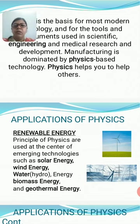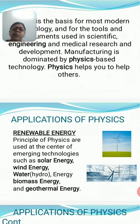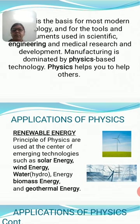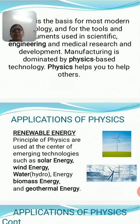The first application is renewable energy. The principles and laws of physics are used at the center for emerging technologies such as solar energy, wind energy, water energy, biomass energy, and geothermal energy. With the help of solar energy from the sun, we can generate electricity using photovoltaic cells. With wind energy and water energy we can also generate electricity, and the same applies to biomass and geothermal energy. All renewable energy can be generated with the help of physics.